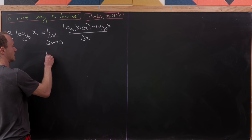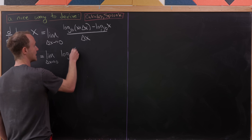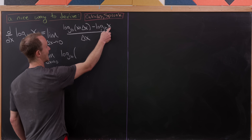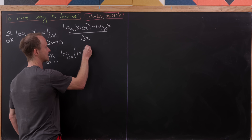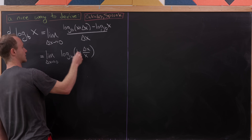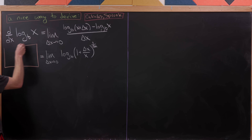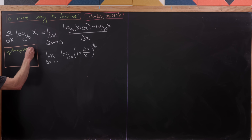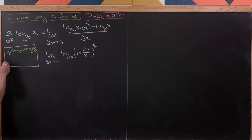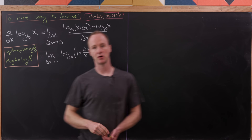We have the limit as Δx approaches 0 of log base b of (x + Δx)/x. We split that as x/x + Δx/x, which is 1 + Δx/x, and by a logarithm rule that quantity is raised to the 1/Δx power. Recall: log(a) − log(b) = log(a/b), and r·log(a) = log(a^r). That's what we used here.